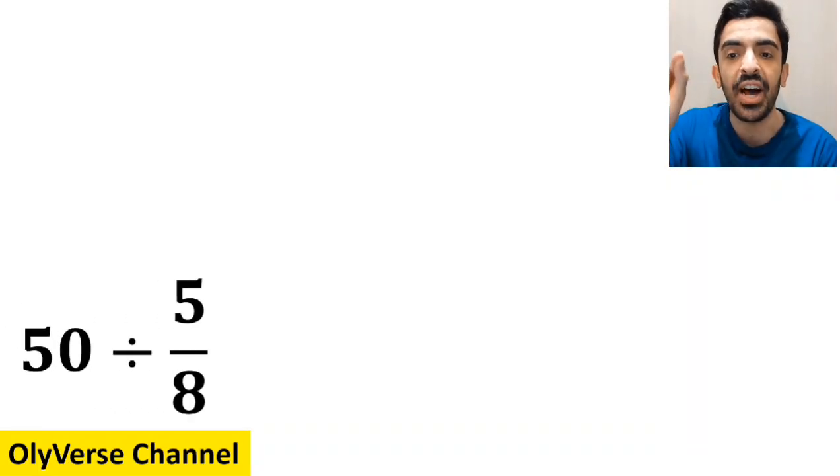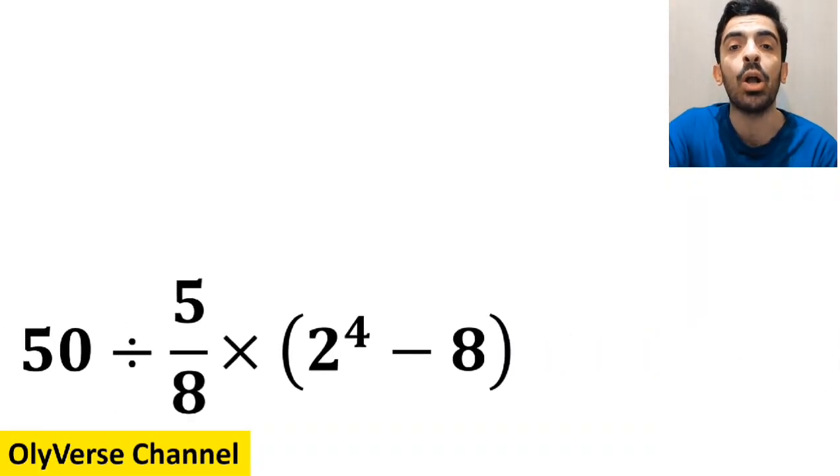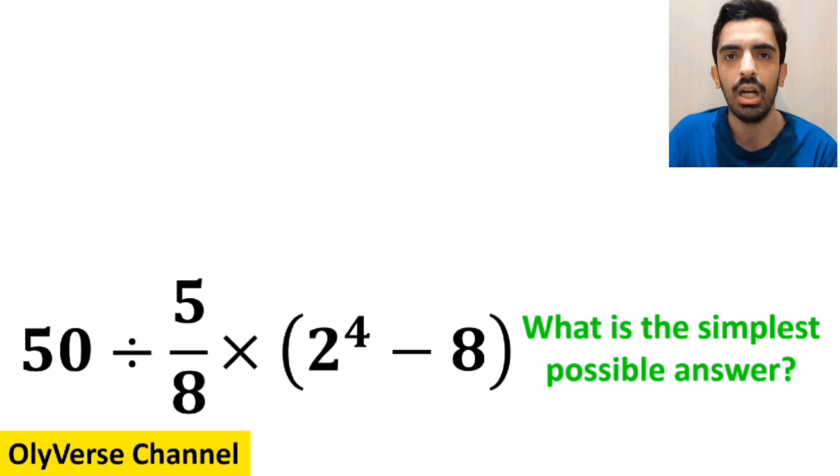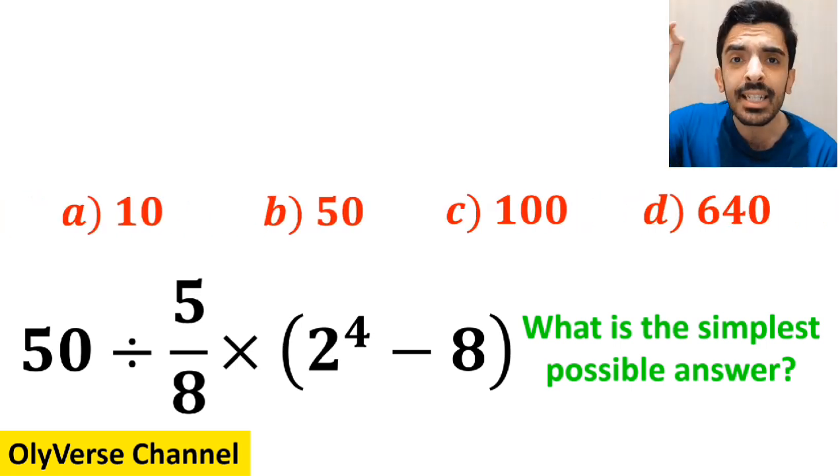If we have the expression 50 divided by 5 over 8 multiplied by open parenthesis 2 to the power of 4 minus 8 close parenthesis, then what is the simplest possible answer to this question? Which option do you think is the correct answer?